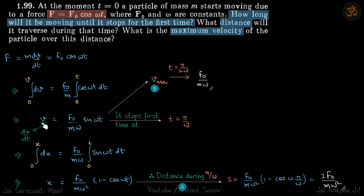At t = 0 it is already stopped and then starts moving, so the next time it stops is when ωt = π, which means t = π/ω. This is when it first stops. During that duration, the distance travelled is found by substituting t = π/ω into the displacement expression.